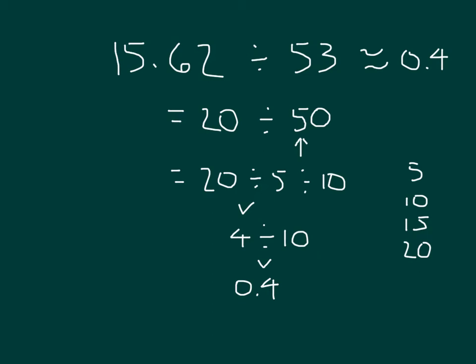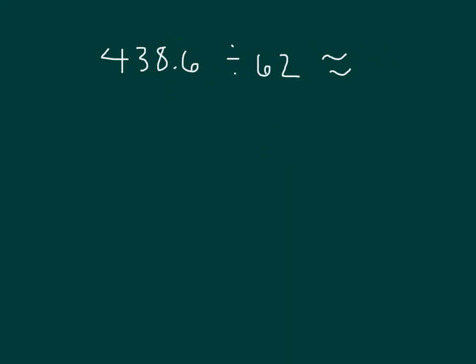So we're estimating by identifying easily identifiable multiples. Here I have another problem. 438 and 6 tenths divided by 62. We'll start first by estimating that divisor. 62 is close to 60.